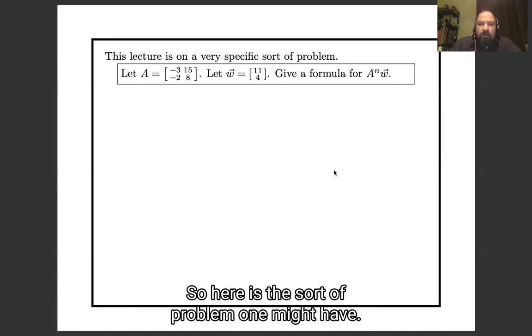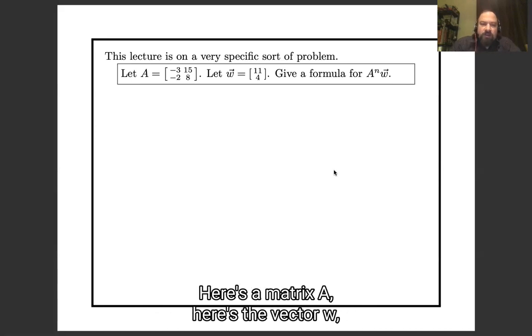So here is the sort of problem one might have: here's a matrix A, here's a vector w, give a formula for A to the n times w.